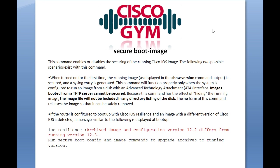So if you do a show flash, your running IOS image will not show up, which can lead to some confusion — especially if you've got an engineer that doesn't realize this feature is running and thinks the running IOS image has been blown away. Keep that in mind; we'll touch on that a little bit more later. To disable this, you just issue the no secure boot image. You need to be connected via the console to do this, so keep that in mind when implementing this feature. The second scenario is simply the version mismatch that we just went over with the secure boot config.